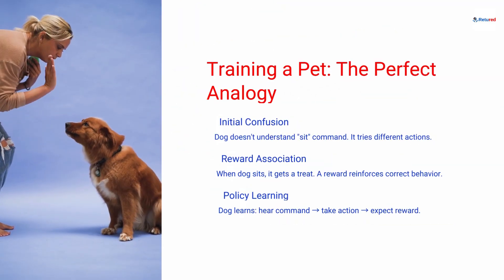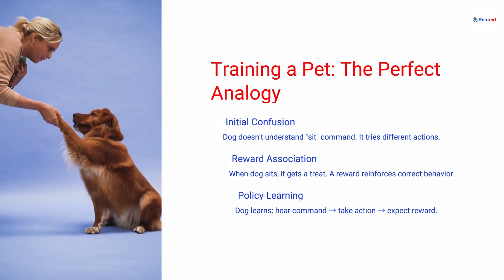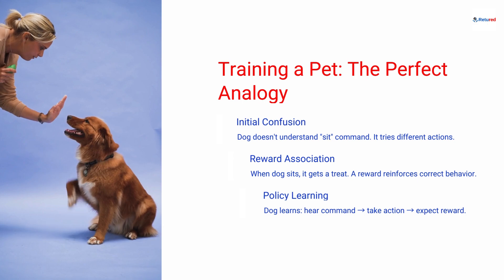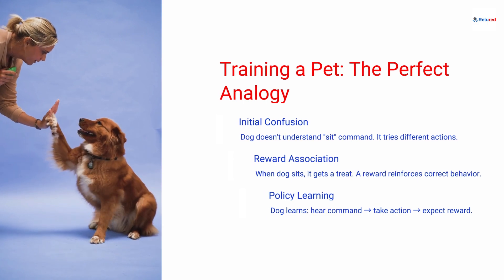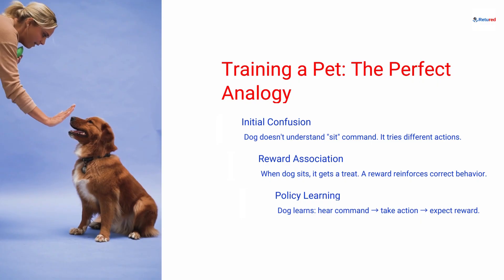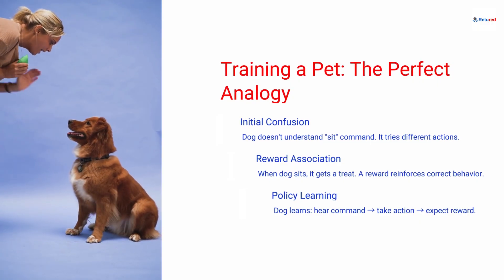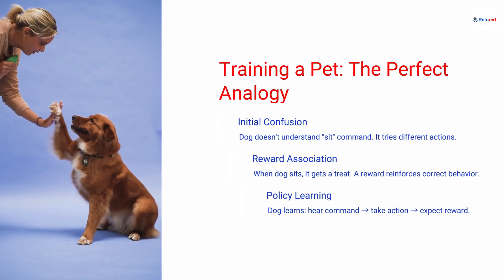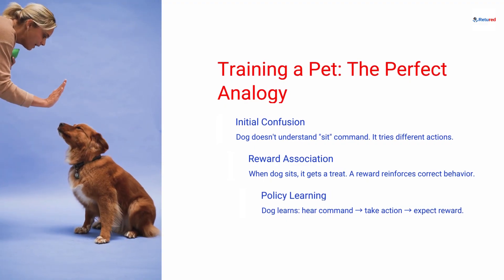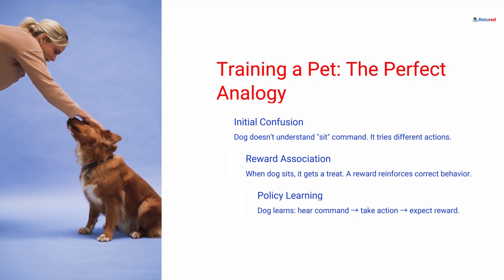Now, imagine training a pet. When teaching a dog to sit, it initially tries different actions. When the dog sits correctly, it receives a treat. Over time, the dog learns to associate the command with the correct behavior through that reward feedback. This is a classic demonstration of how RL algorithms learn from experience.